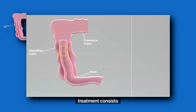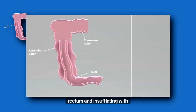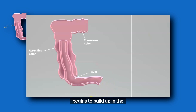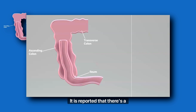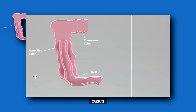Given this mechanism, the treatment consists of putting a catheter into the rectum and insufflating with air. As the air pressure begins to build up in the rectum, sigmoid colon, transverse colon, and ascending colon, it'll start to push the ileum down and back out. It is reported that there is a recurrence rate of intussusception of about 20%, but most cases we see do not have any recurrence.